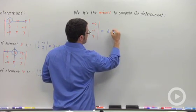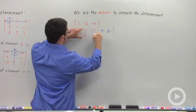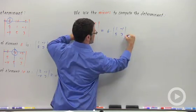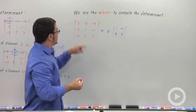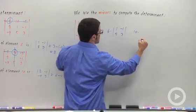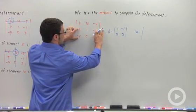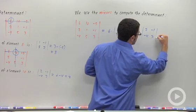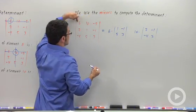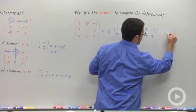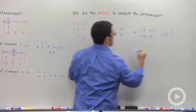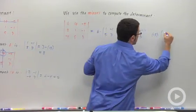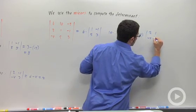So say 6 times the minor associated with 6, which is 1, negative 1, 5, 3, this determinant. And then, 10 times the minor associated with 10 is 2, negative 1, negative 4, 3. And then, finally, the last one in this row, this top row, negative 5 times, and then the minor associated with negative 5 would be this guy. 2, 1, negative 4, 5.